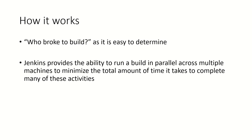Earlier when Jenkins was not there, it was really difficult for the team to know who broke the build. But after Jenkins, because we are using the CI/CD pipeline, it will immediately notify whose commit is breaking the build, so finger pointing is not there in the team. The developer can immediately pick up the error, start debugging, and once the code is fixed, push it to Git again and the build will start. Now it is easy to determine.